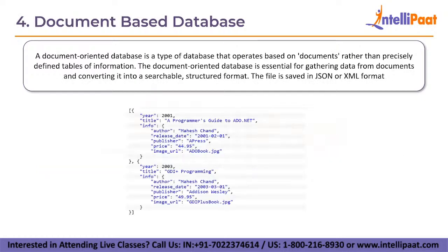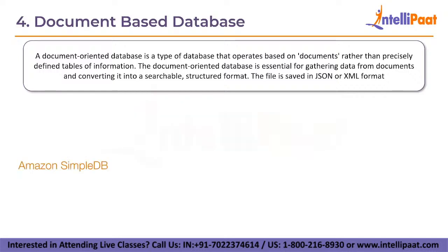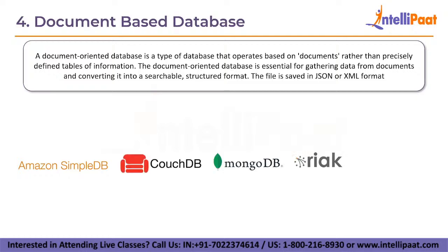Next is the document-based database. A document-oriented database is a type of database that operates based on documents rather than precisely defined tables of information. It is essential for gathering data from documents and converting it into a searchable, structured format. Files are saved in JSON or XML format, and the value is recognized by the database and may be queried. For example, a JSON document with tags and values can define a book, such as book title, author, release date, publisher, and price. Some widely used document-based databases include Amazon SimpleDB, CouchDB, MongoDB, Riak, and Lotus Notes.